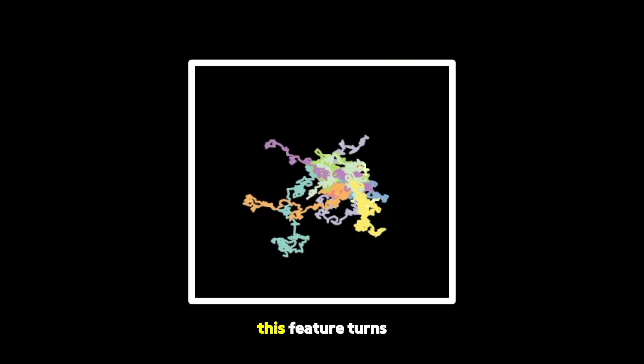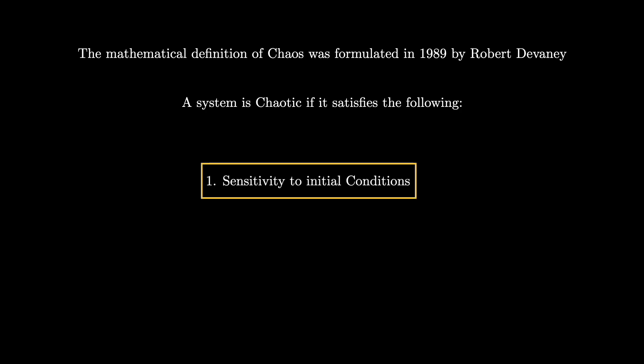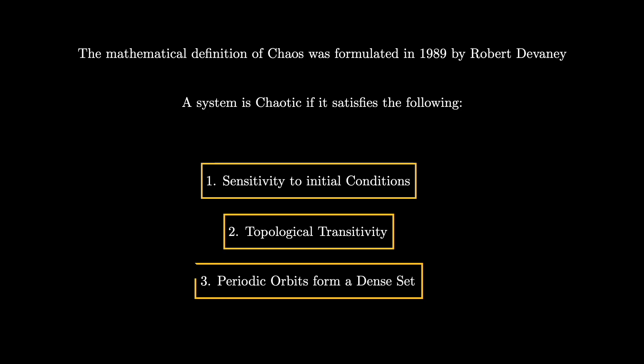Although essential, this feature turns out to not really be fundamental to the precise mathematical notion of chaos. I'll explain what I mean by this in just a moment. The precise definition was formulated in 1989 by an American mathematician named Robert Devaney. He defined a system as being chaotic if it satisfied the following three criteria. The system was sensitive to initial conditions, it was topologically transitive, and its periodic orbits formed a dense set.